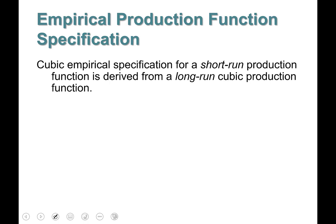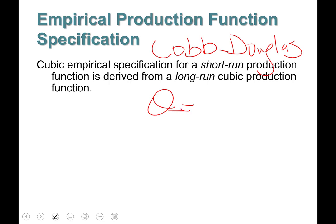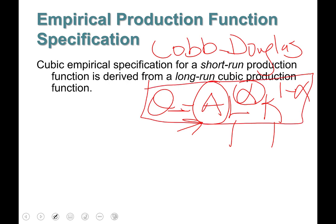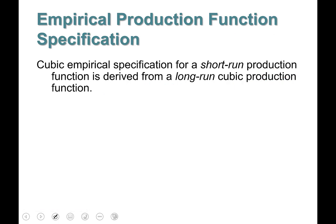There are many different types of production functions. One example is the Cobb-Douglas production function: Q = A · L^α · K^(1−α), where α and (1−α) represent the contribution of labor and capital to output, and A captures technological change or shocks. To estimate it you would take natural logarithms of both sides. However, we are not going to focus on Cobb-Douglas; instead we will focus on the cubic production function specification.